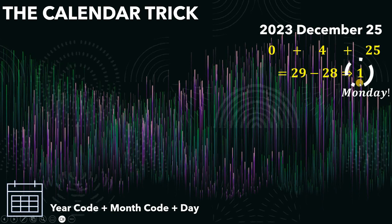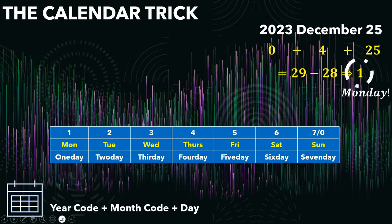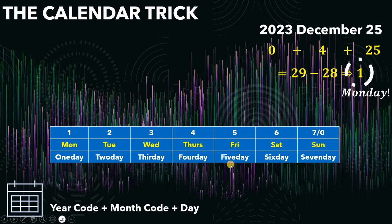The final answer tells us the day of the week, so we need to memorize this table. If we get an answer of 1, that is Monday — or 'one-day.' If the answer is 2, we get Tuesday — 'two-day.' If we get 3, that is Wednesday — 'third day.' If we get 4, that is Thursday — 'four-day.' If we get 5, that is Friday — 'five-day.' If we get 6, that is Saturday — 'six-day.' If we get 7, or 0, or a multiple of 7, that is Sunday — 'seven-day' or 'none-day.' Memorize this table — it is very easy.